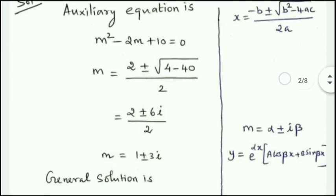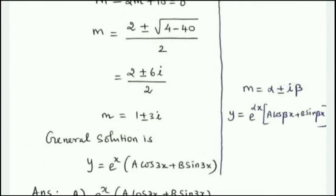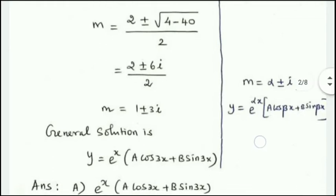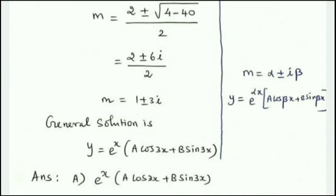With roots in the form α ± iβ, the general solution is y = e^(αx)(A cos βx + B sin βx). Here α = 1 and β = 3, so the solution is y = e^x(A cos 3x + B sin 3x).